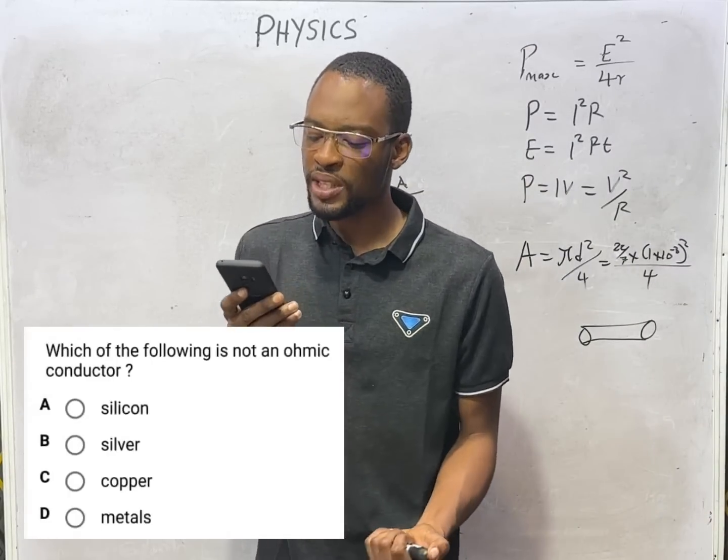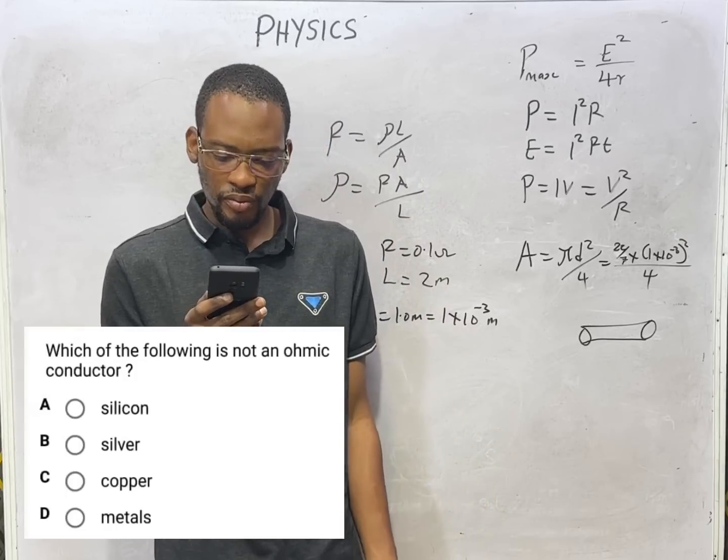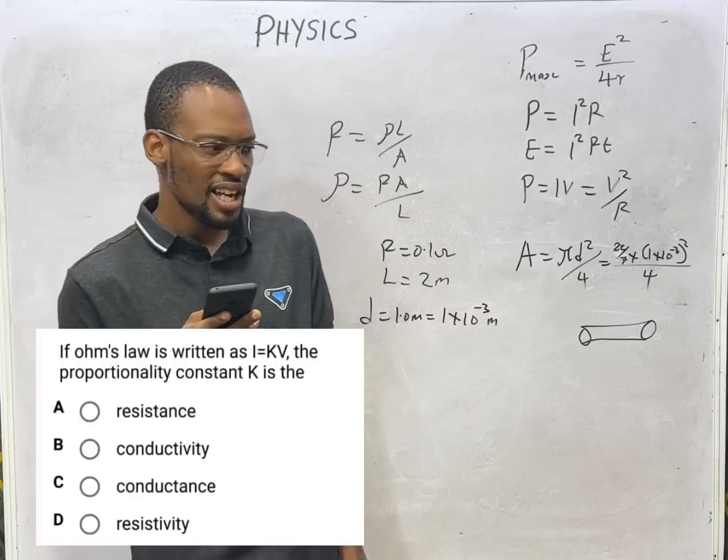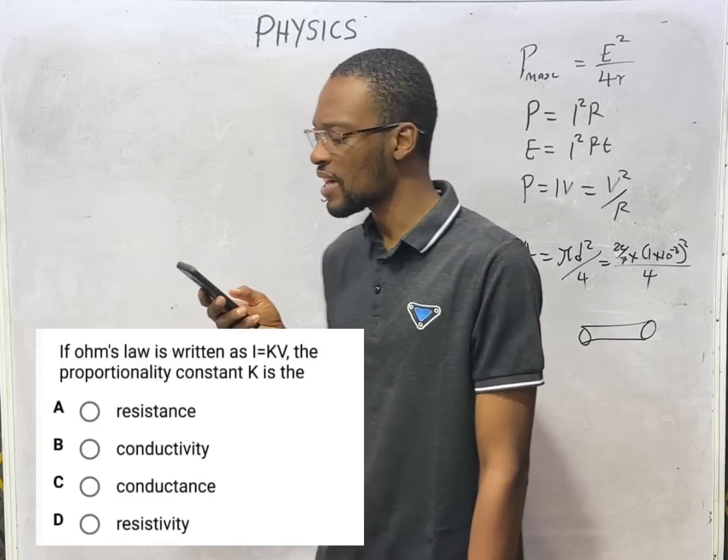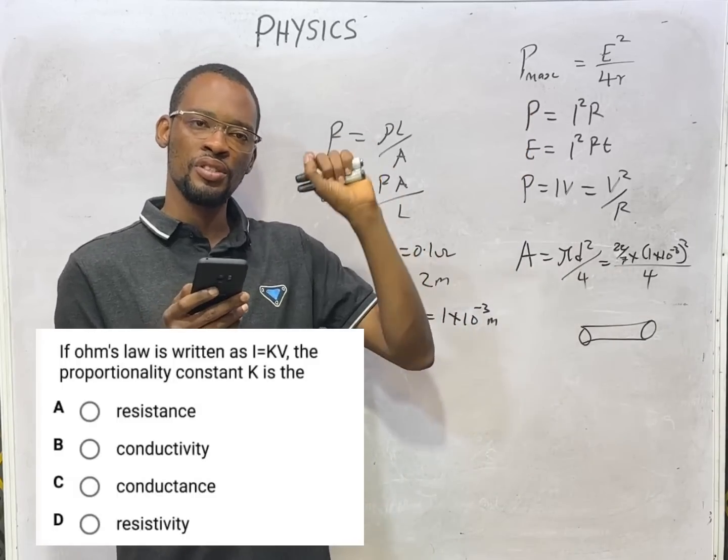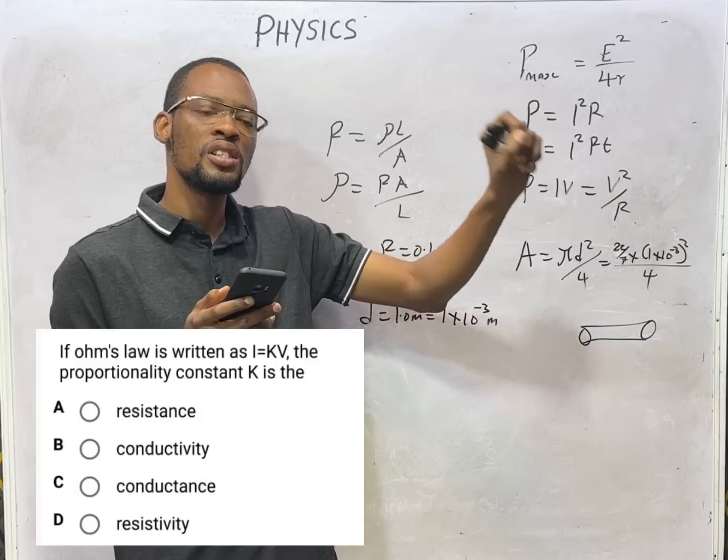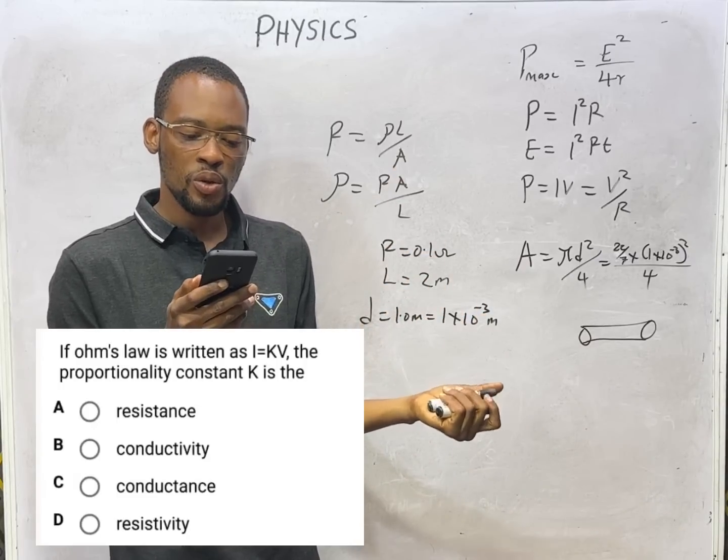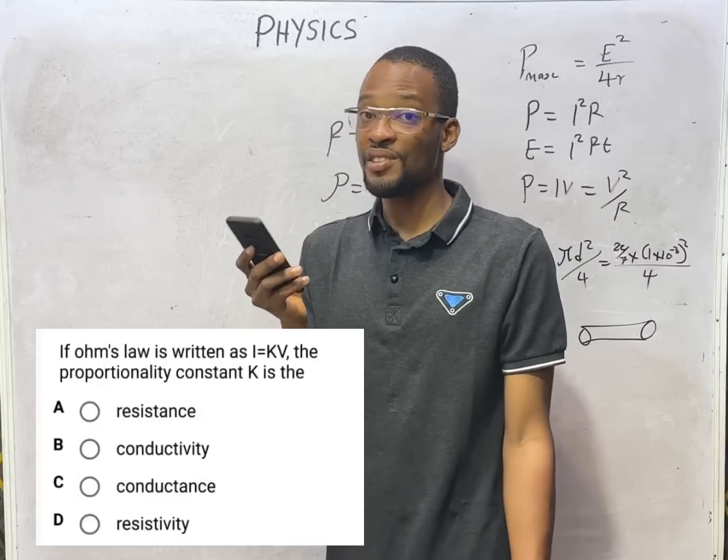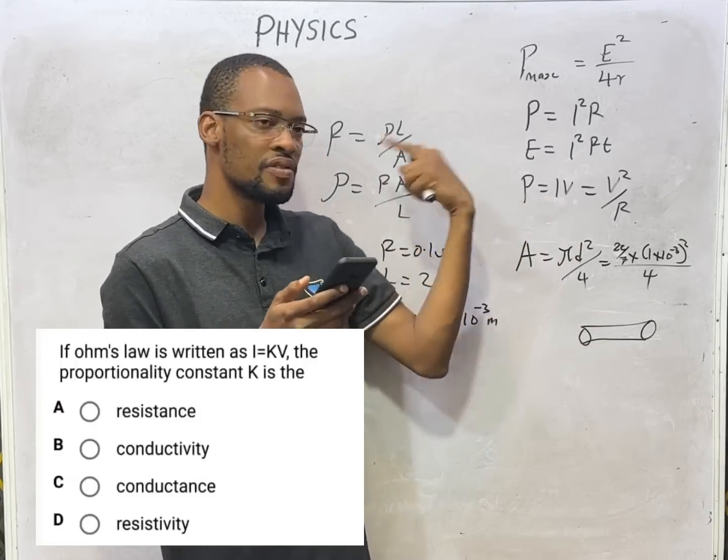Which of the following is not an ohmic conductor? Silver is a metal, copper is a metal, silicon is not a metal, it is a metalloid and we treated that under semiconductor. So A is the correct option, silicon is not an ohmic conductor. If Ohm's law is written as I = kV, the proportionality constant k is conductance. For Ohm's law, V is proportional to I and V = RI. If you switch it to say I is proportional to V, the constant in front of the voltage is no longer resistance, it is inverse of resistance and that will give you conductance.